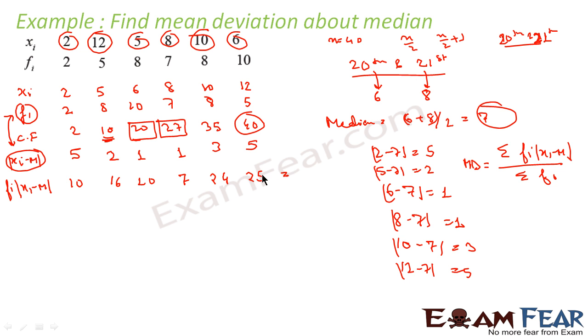This becomes total, if you add, this becomes 25 plus 24 is 49. 49 plus 7 is 56. 66, 72, 82, 92. This is 92.